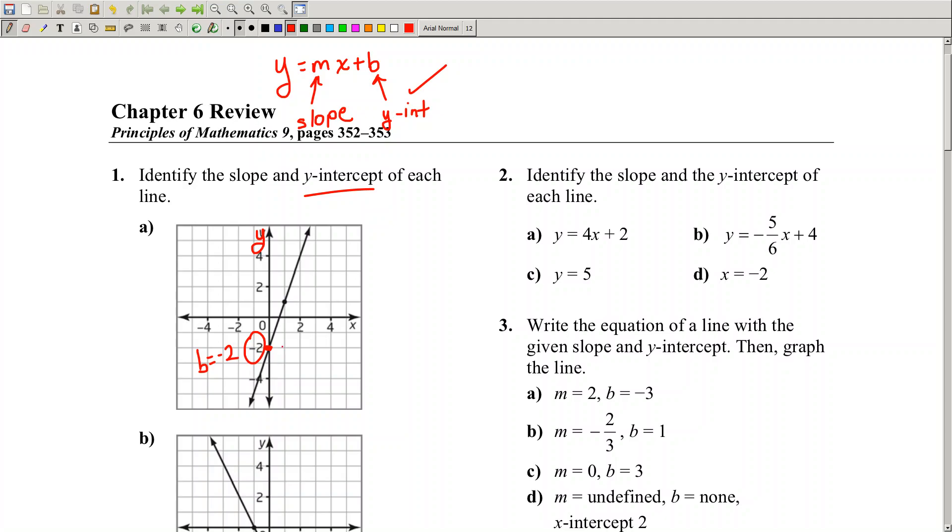You need two points on the line. What's beautiful is I've given you two points - the y-intercept and another point right there. All I have to do is count the rise and the run.